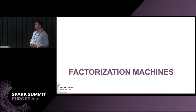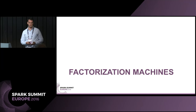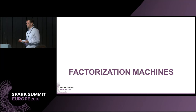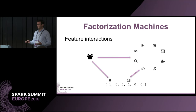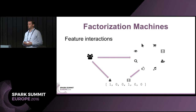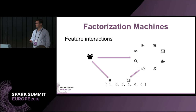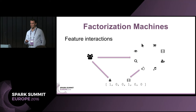Factorization machines are a fairly recent class of model introduced around 2012 that have become popular in domains with large cardinality categorical features, and in particular datasets that have a lot of feature interactions or where feature interactions are important. Examples include recommender systems, online advertising, and social networks.